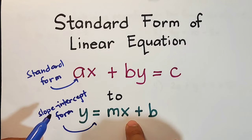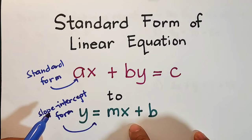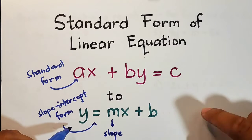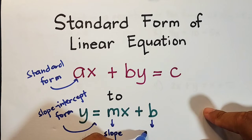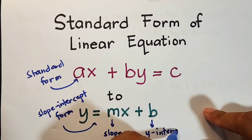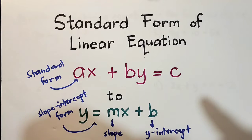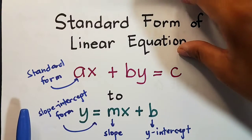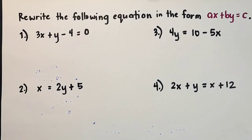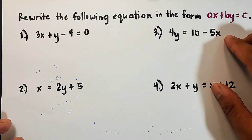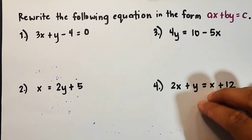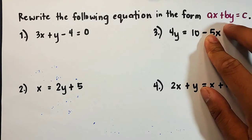In the slope-intercept form, y and x are the variables, m is the slope, and b is the y-intercept. This form is very useful whenever you are trying to graph and identify your slope and y-intercept. The first part of our video is that we will rewrite the following equations in the form ax plus by is equal to c. I have four examples here.